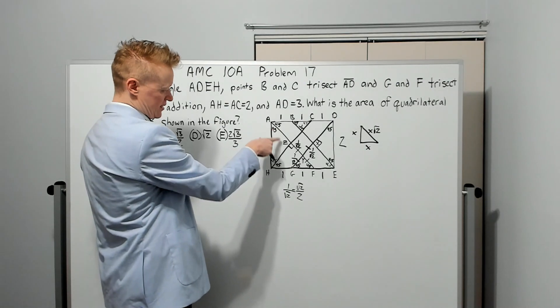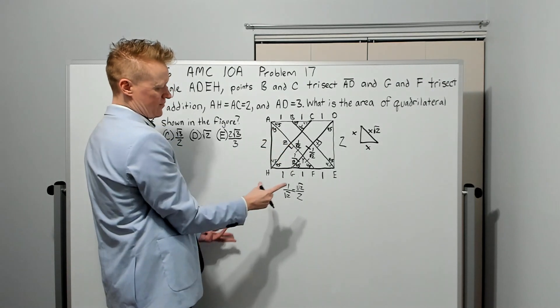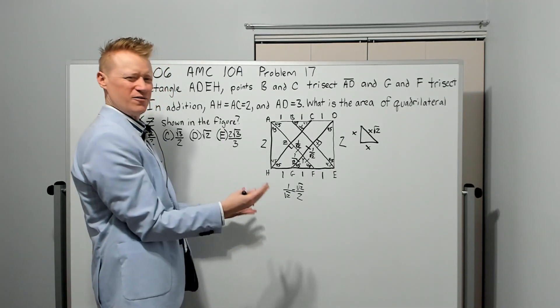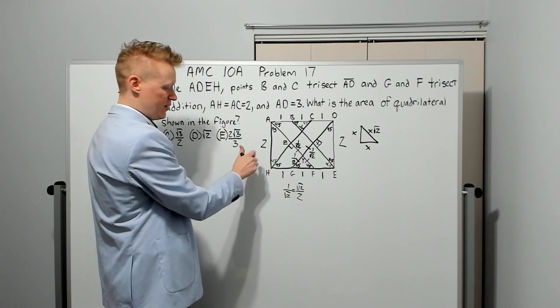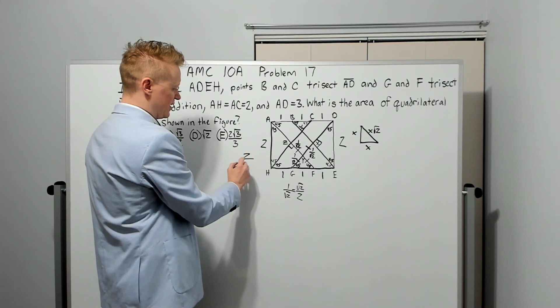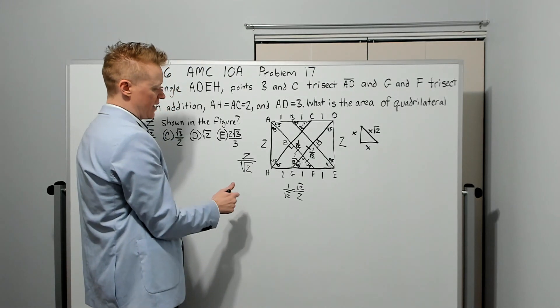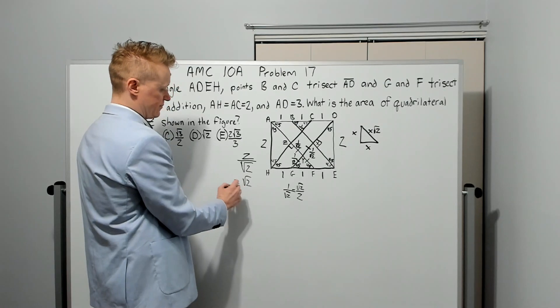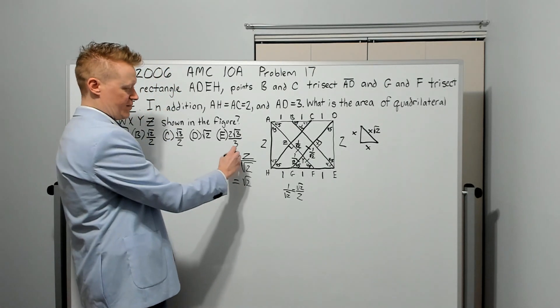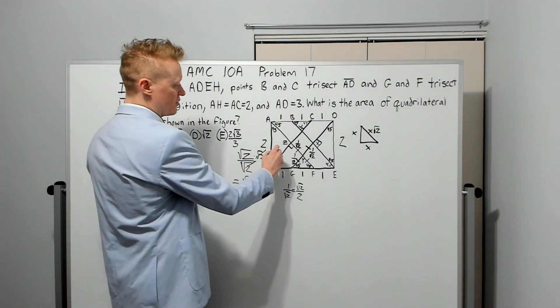Another thing you might do as well, because this is 45-45-90 here, we could find this length and verify this will really work. I would divide two by root two to get two over root two, which gives me root two basically. Divide the root two—you can make this root two times root two, which is two. Cancel the root two, so this would be root two.